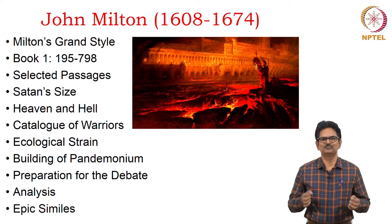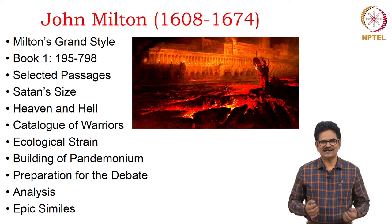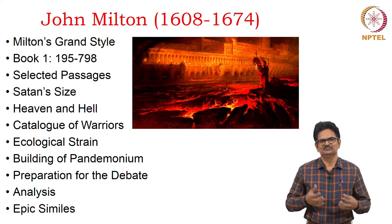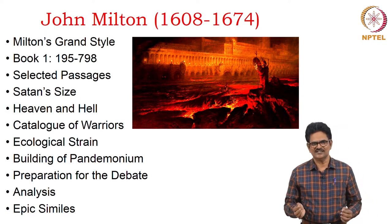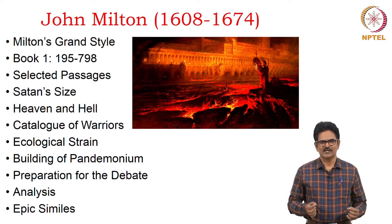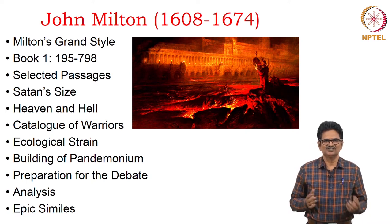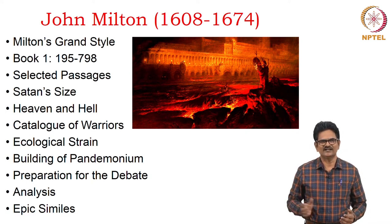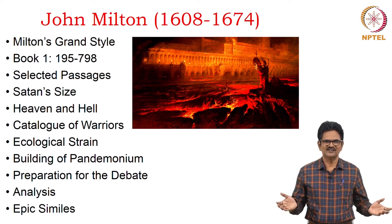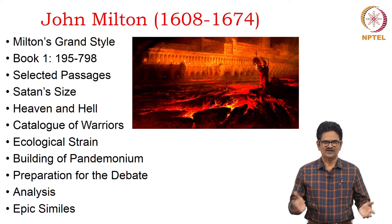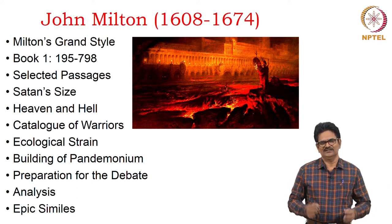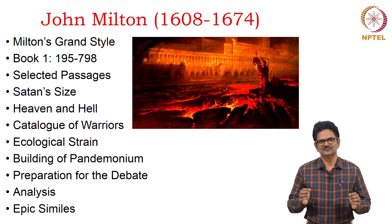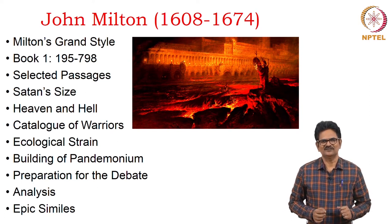We come to the second lecture on Paradise Lost Book One. We will begin with Milton's grand style, seeing its features, and then discuss lines 195 to 798 with reference to selected passages dealing with Satan's size, heaven and hell, catalog of warriors, ecological strain, building of Pandemonium, preparation for the debate in Book Two, and specific poetic devices, particularly epic similes.